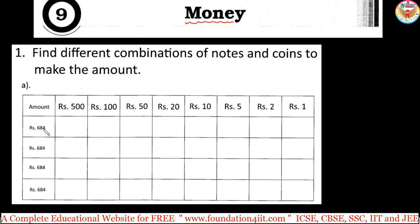The amount is 684, and the available denominations are 500, 100, 50, 20, 10, 5, 2, and 1. Let us understand how a child can work through this.